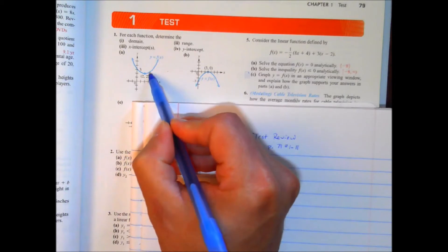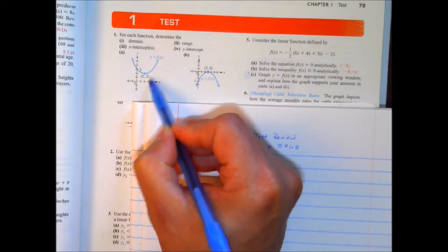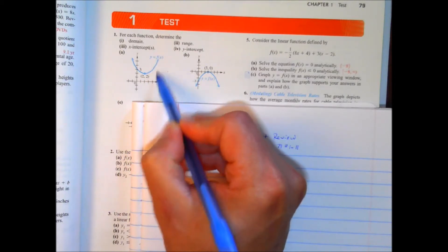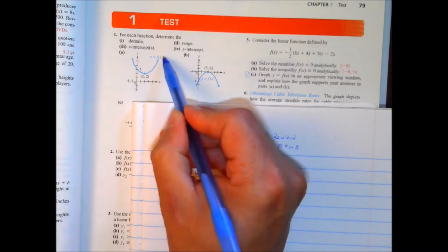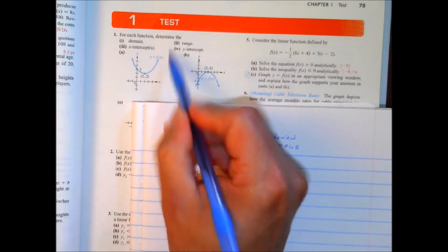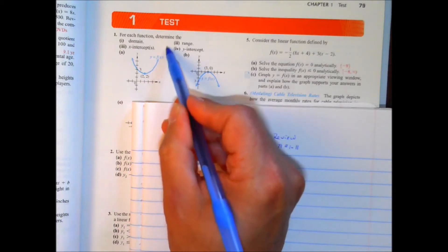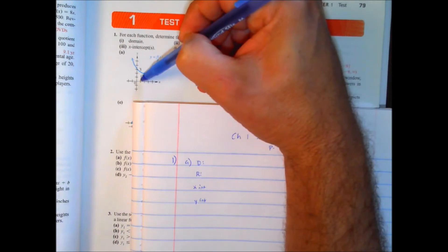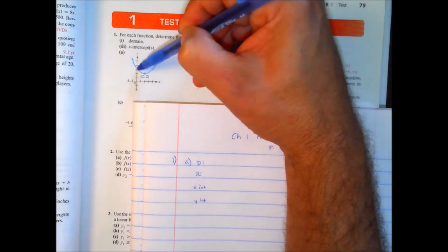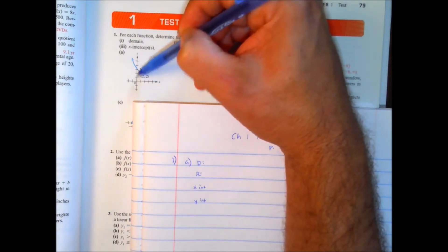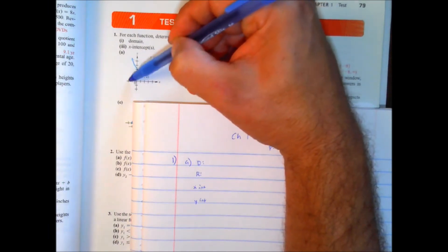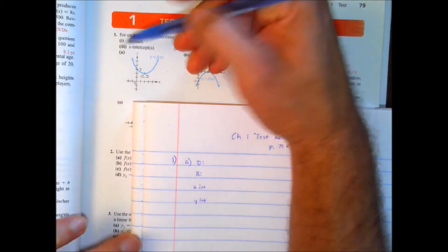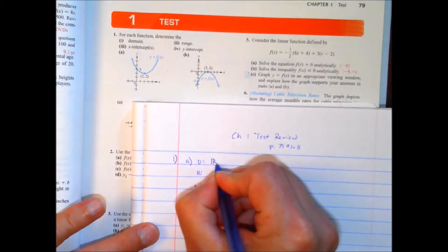From the vertex, this point would have an x of 3, this point here an x of 4, then 5, 6, 7, 8, and it keeps going. Same thing on the other side: 1, 0, negative 1, negative 2, etc. So our domain is going to be all real numbers.